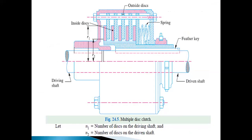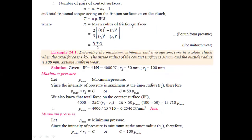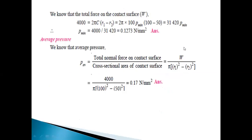In a multiple disc clutch, there are a number of discs on the driving shaft and discs on the driven shaft. The total number of friction surfaces n equals n1 plus n2. The torque is calculated using the standard torque formula, and the mean radius uses either uniform pressure or uniform wear theory formula.